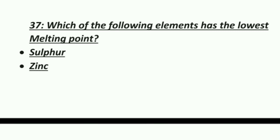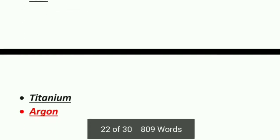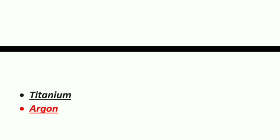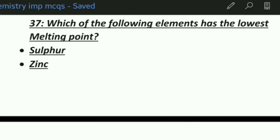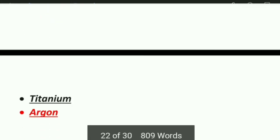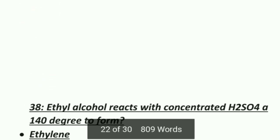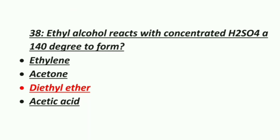Thirty-seventh MCQ: which element has the lowest melting point? Option 1: Sulfur, Option 2: Zinc, Option 3: Titanium, Option 4: Argon. The correct answer is argon — argon has the lowest melting point.